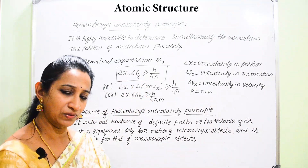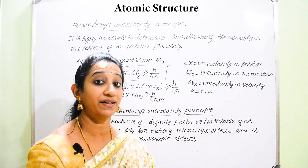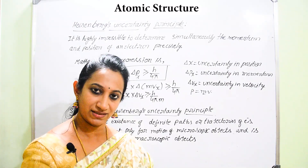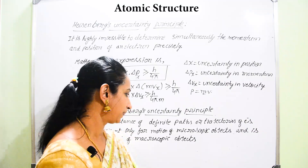The first significance of Heisenberg's uncertainty principle is that it rules out the existence of definite paths or trajectories of electrons. Trajectories means the path traced by the electron, determined by both its velocity and position. Classical theory could determine the electron's exact definite position and momentum, but according to this principle, it is no longer possible, so we can no longer accept that there are definite circular orbits around the nucleus in an atom.